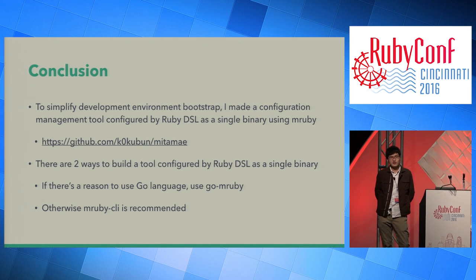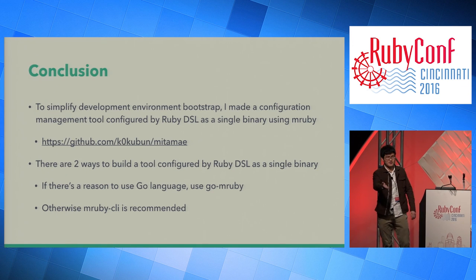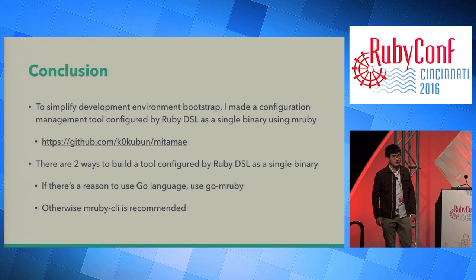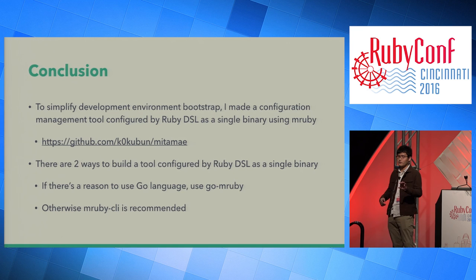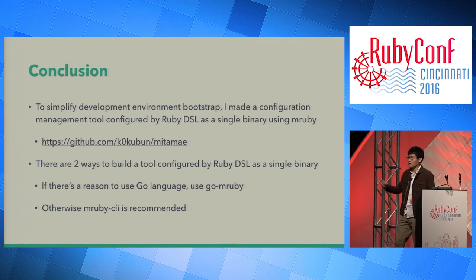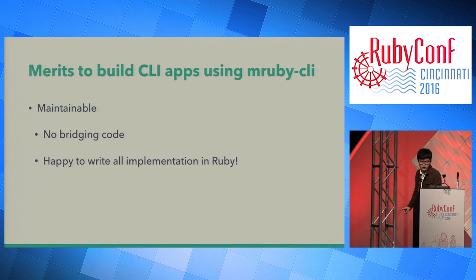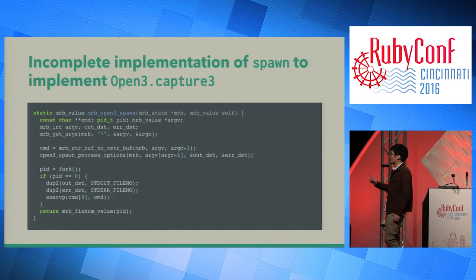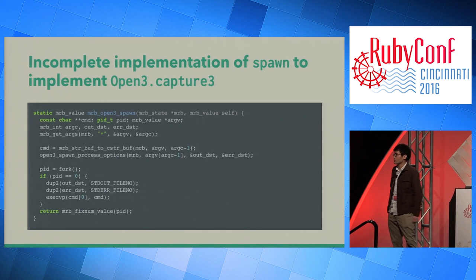Question: are you able to export the C part as an MRB gem? Yes — I exported it as an MRB gem called mruby-open3. Since the spawn method is used only by the mruby-open3 library, I implemented it inside the mruby-open3 MRB gem. So it is already ported to an MRB gem.